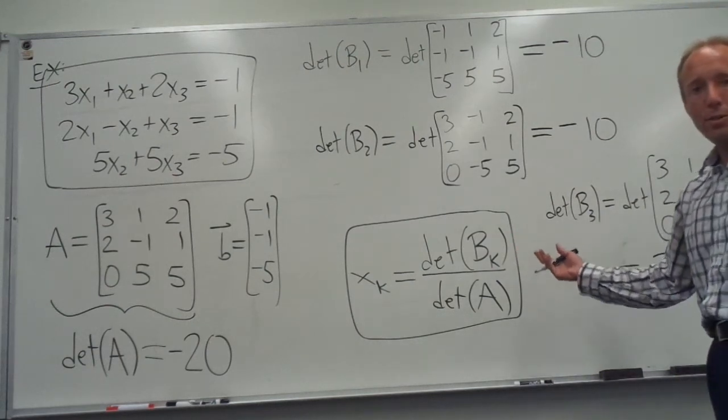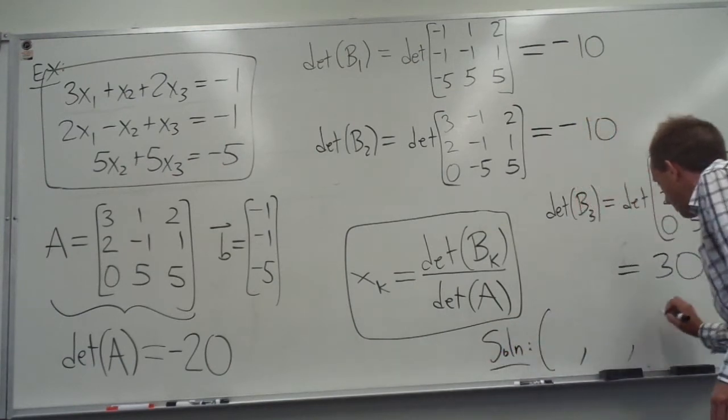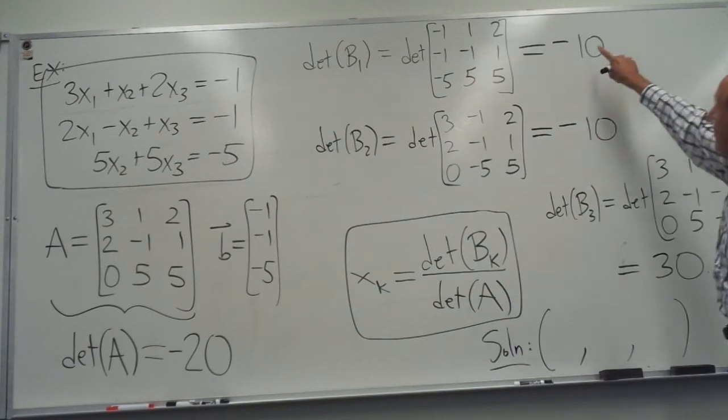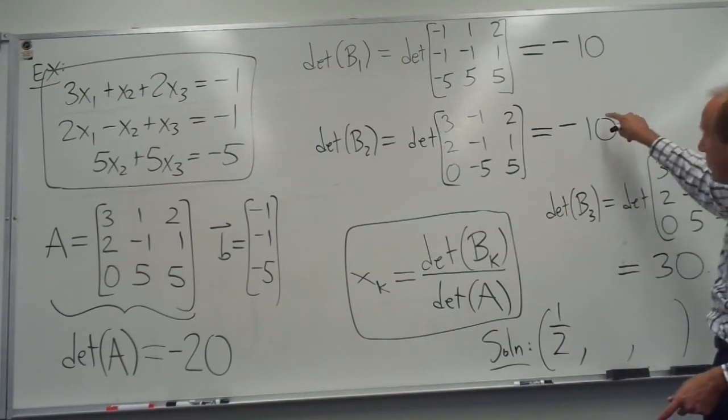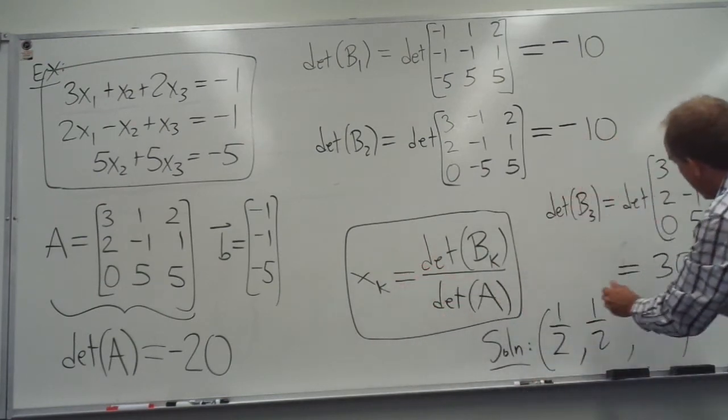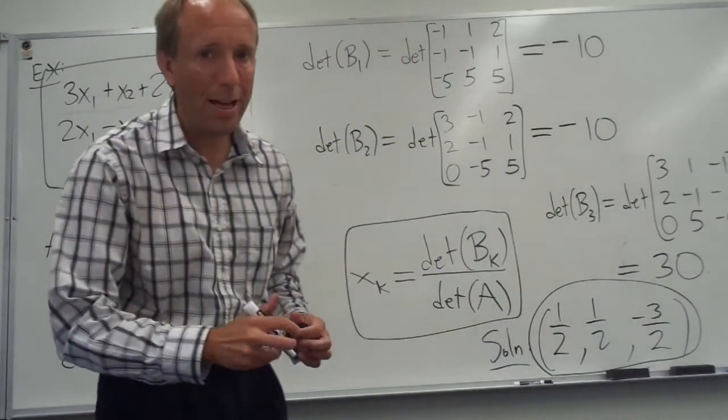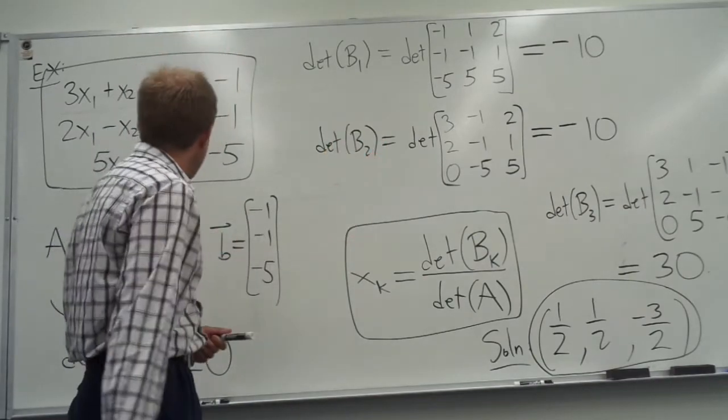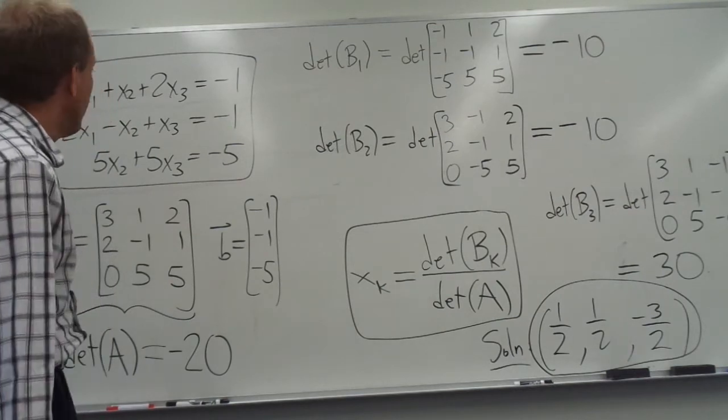So now we can find x1, x2, and x3. So the solution, the solution is x1, x2, x3. So what is x1? x1 is negative 10 over negative 20, which is 1 half, and x2 is negative 10 over negative 20, which is 1 half. I'm just using this formula that's in the box here, right? And then for x3, I'm going to take 30 and divide it by negative 20, and that gives me negative 3 halves. So here is my unique solution. I never had to do one elementary row operation at all. I know there's going to be a unique solution. Of course, you can check, if you don't believe me, you can always check that this actually does work in all three equations.